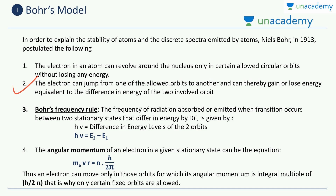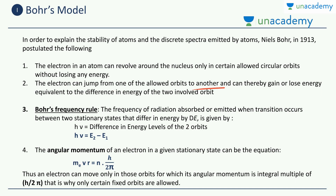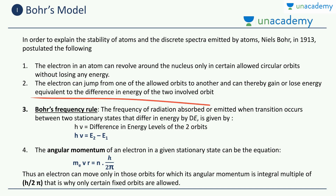The second postulate states that the electron can jump from one of the allowed orbits to another, thereby gaining or losing energy equivalent to the difference between the two involved orbits. So the electron, previously rotating in its own orbit without external influence, can change its orbit number — say from n=1 to n=3 — and thereby gain or lose the energy equivalent to the difference in energy of those two orbits.